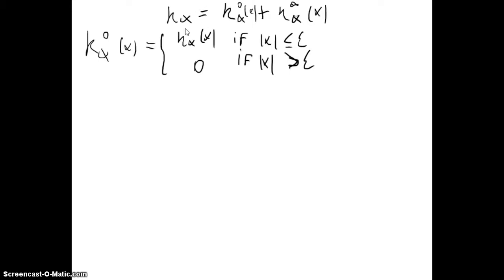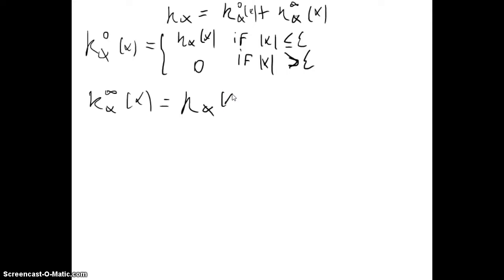Let's see the proof of the first part. We can split the kernel k_alpha into k_alpha^0 and k_alpha^infinity, where k_alpha^0 equals k_alpha if the absolute value of x is less than or equal to epsilon, and 0 if the absolute value of x is greater than epsilon. And k_alpha^infinity equals k_alpha(x) minus k_alpha^0(x), where epsilon is a positive constant to be determined.